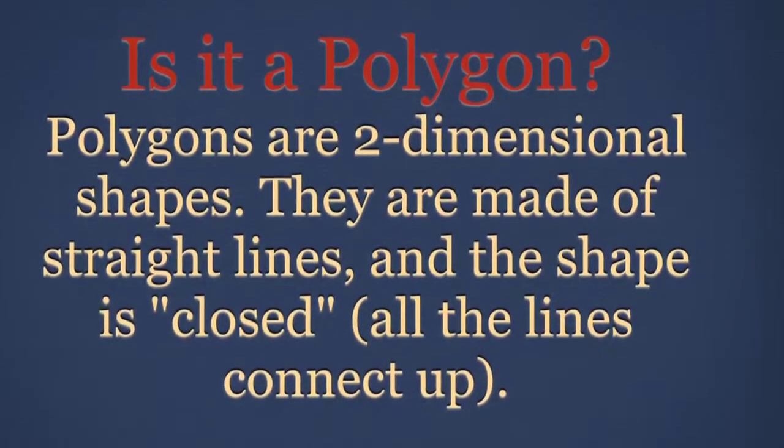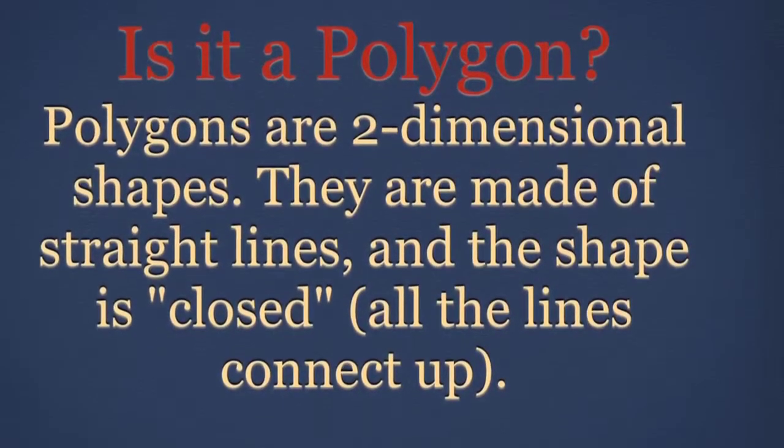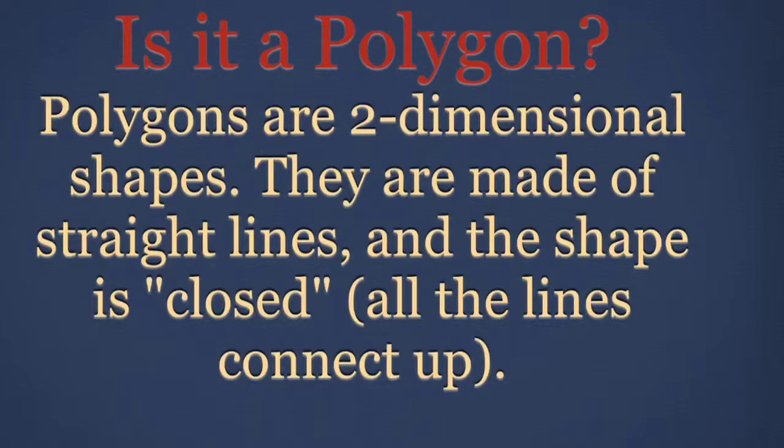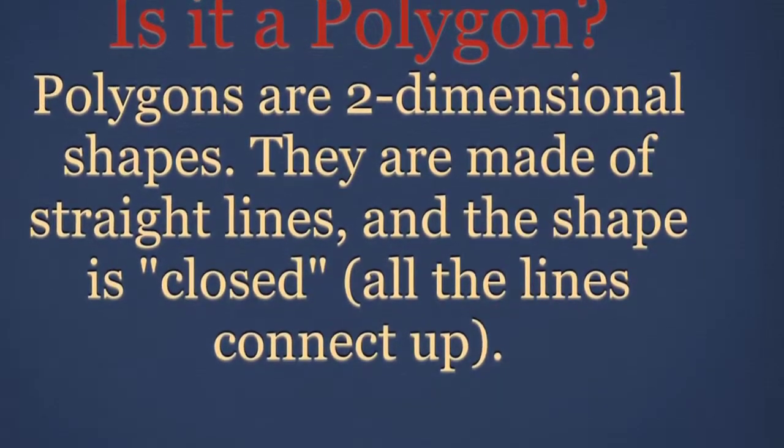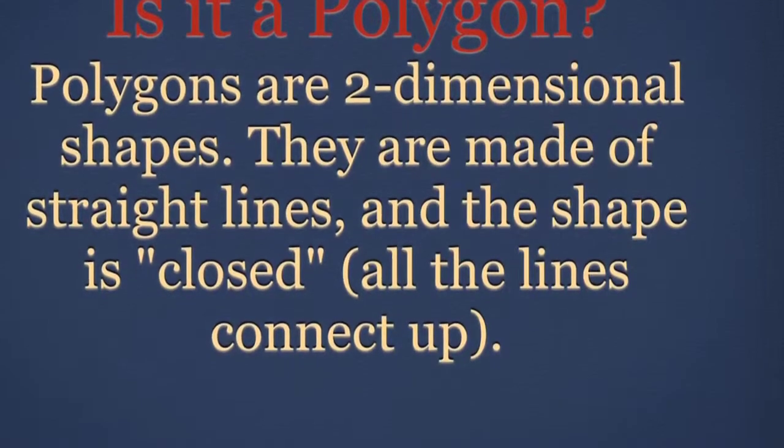Is it a polygon? Polygons are two-dimensional shapes. They are made of straight lines, and the shape is closed. That means that all the lines connect up.